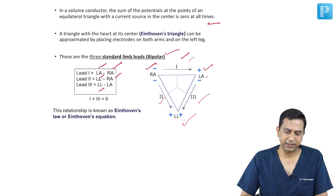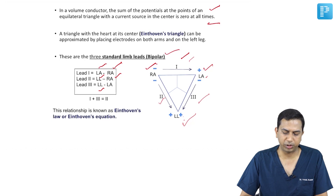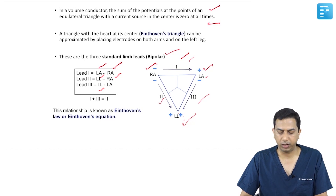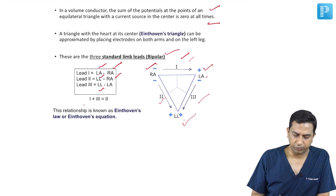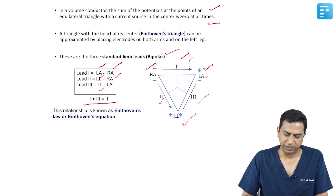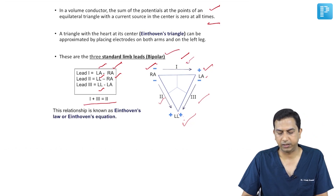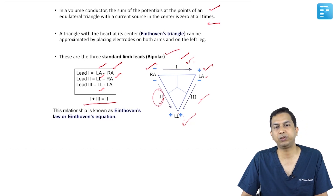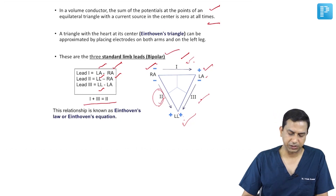Based on the relationship that the sum of potentials at the three points equals zero, this led to Einthoven's law, depicted by the formula: Lead 1 plus Lead 3 equals Lead 2. Essentially, Lead 2 represents the net potential and vector direction of the cardiac activity.